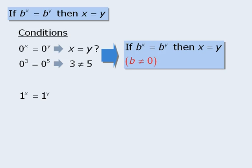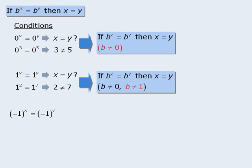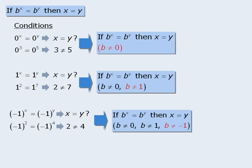Consider this example: if 1 to the power of x equals 1 to the power of y, can we conclude that x equals y? Again, the answer is no. For example, 1 to the power of 2 does equal 1 to the power of 7, but 2 does not equal 7. So the base cannot equal 1. Similarly, if negative 1 to the power of x equals negative 1 to the power of y, we cannot conclude x equals y, since negative 1 to the power of 2 equals negative 1 to the power of 4, yet 2 does not equal 4. So the base cannot equal negative 1.